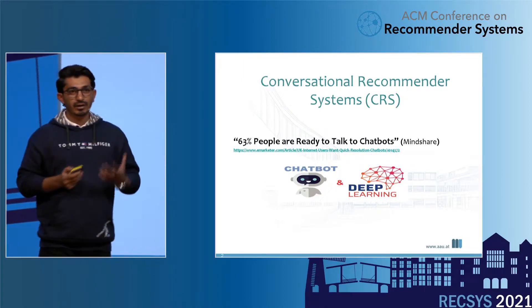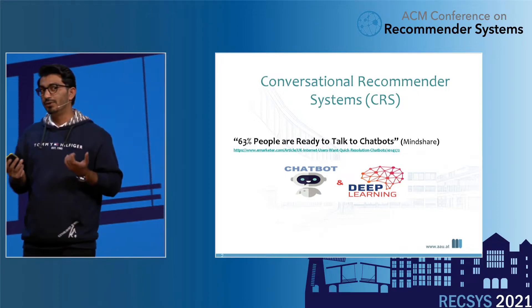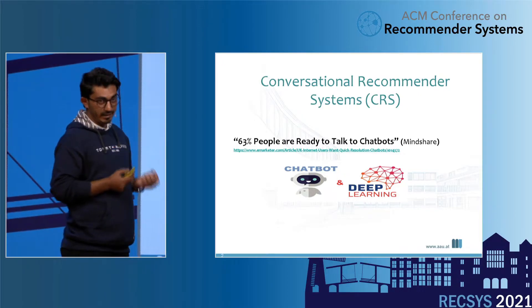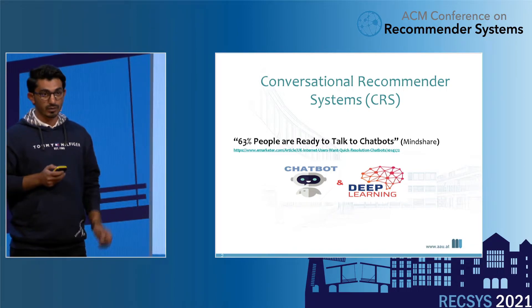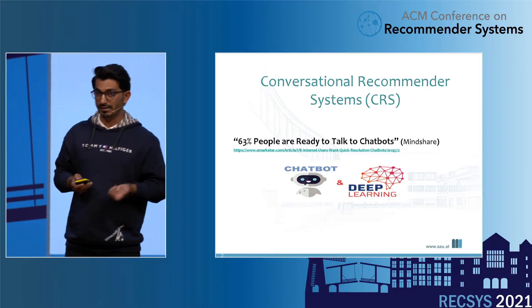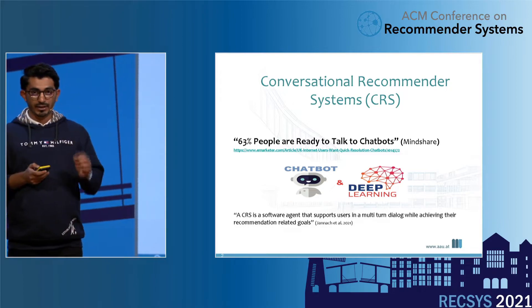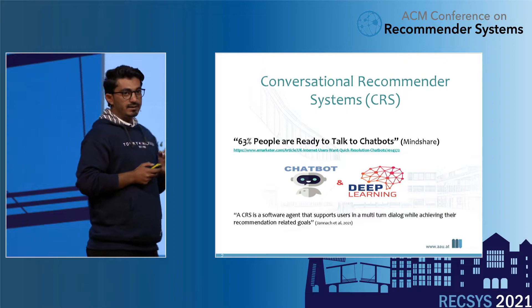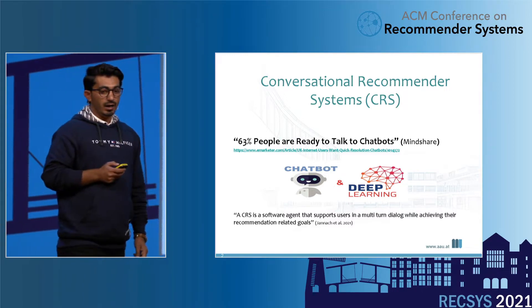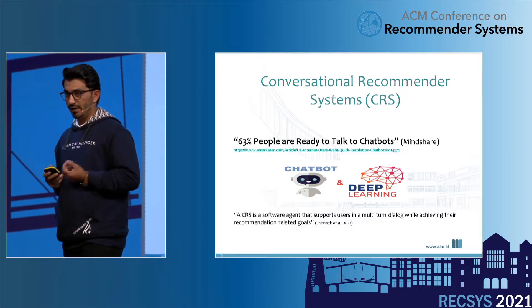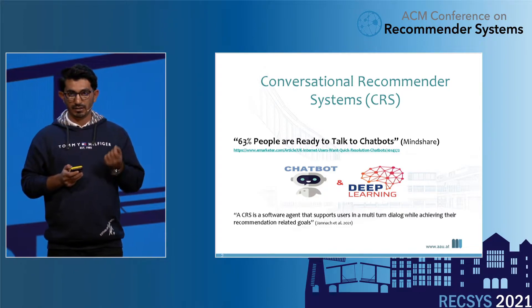According to a study by MindShare in 2016, 63% of Internet users in the UK are ready to talk to chatbots. We have seen an increased number of chatbot applications, probably due to advancements in natural language understanding, speech recognition, or the popularity of deep learning models. Conversational recommender systems, known as CRS, have obtained immense attention in recent years. According to the most recent definition, a CRS is a software agent that supports users in a multi-turn dialogue while achieving their recommendation-related goals. No assumption is made regarding the modality or interaction paradigm of the conversational dialogue system.